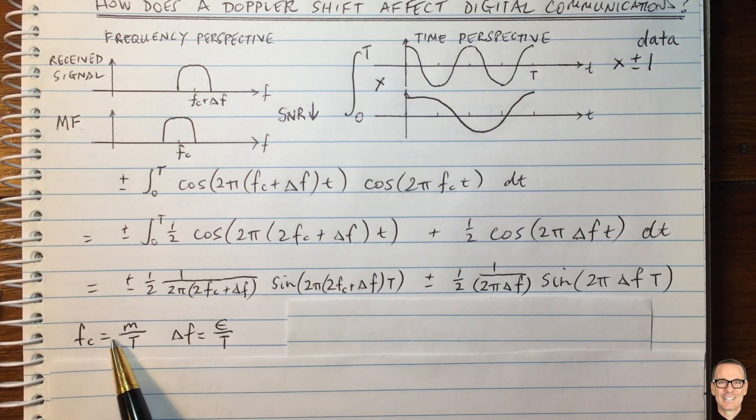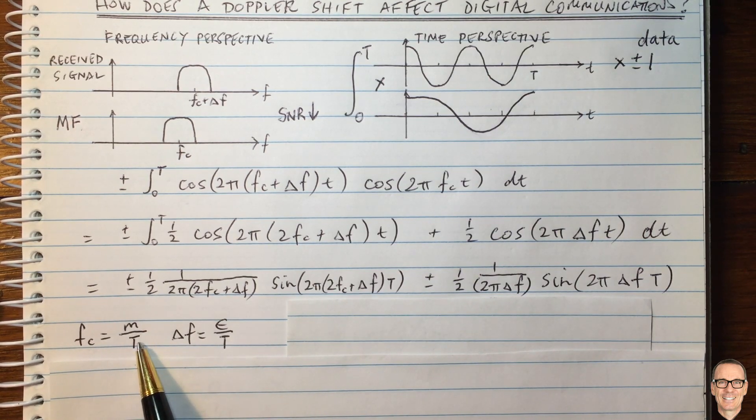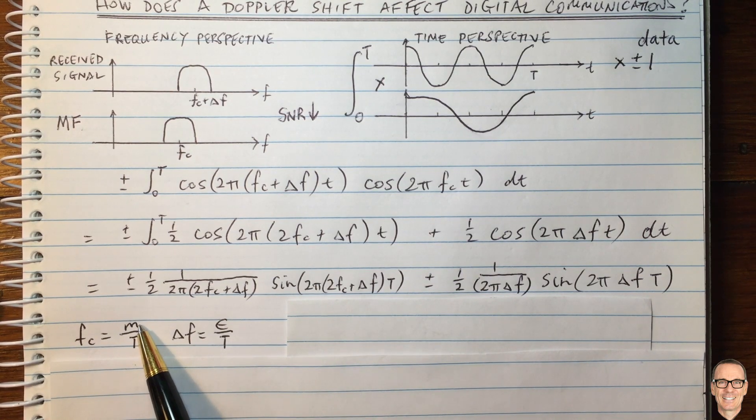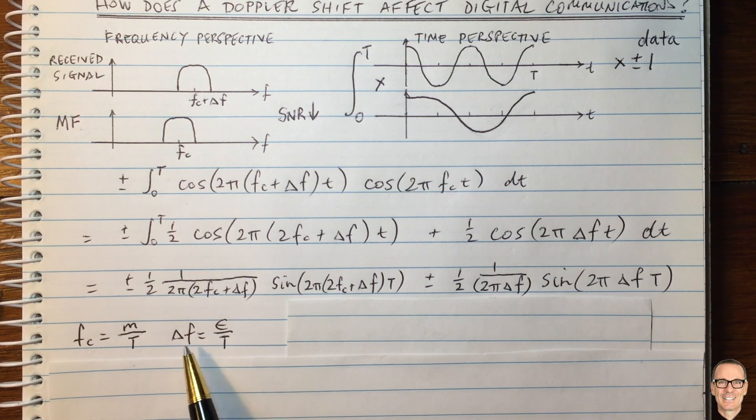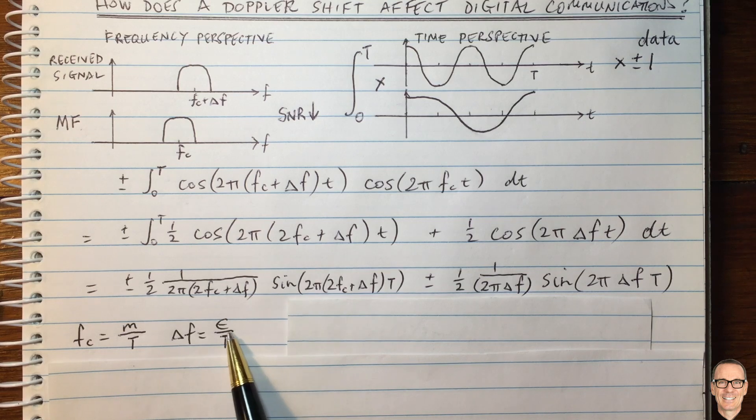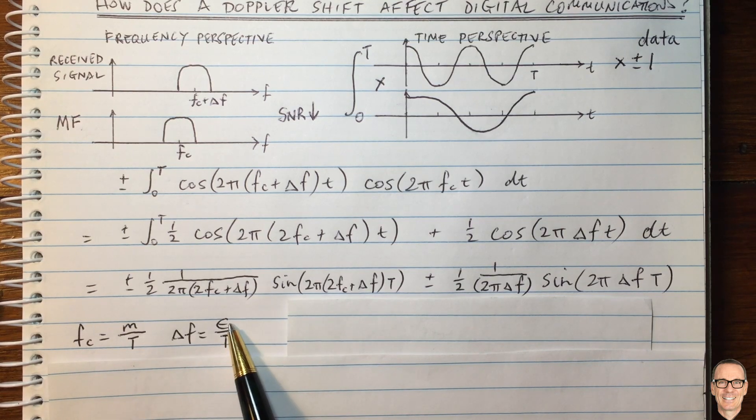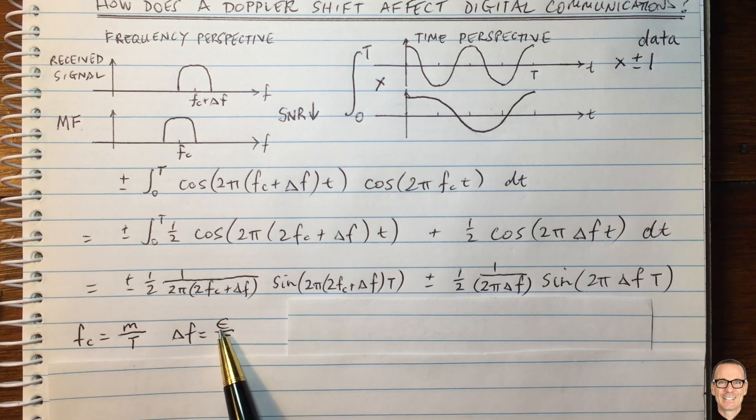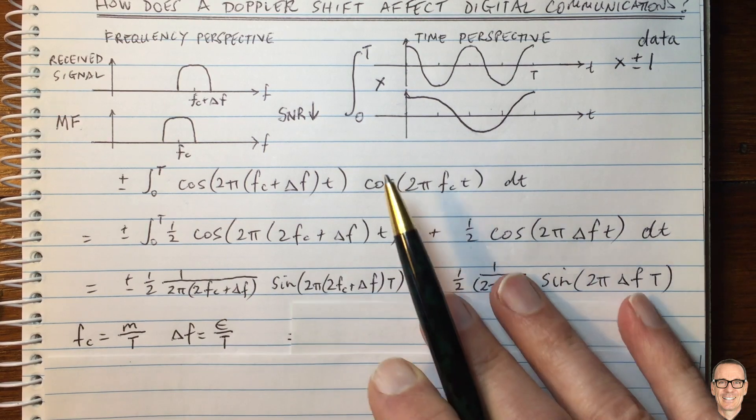So Fc will be M divided by capital T, where M is a large integer. We're also going to look at delta F as being a fraction of capital T. So let's call it epsilon divided by capital T, and we'll see its effect with different values of epsilon. So let's plug these two parameters into this expression here.